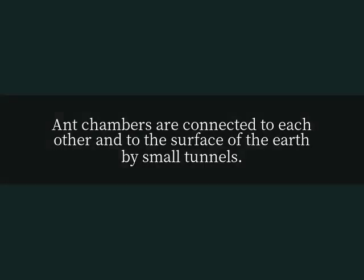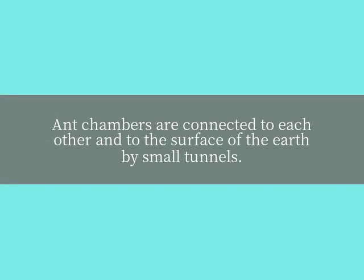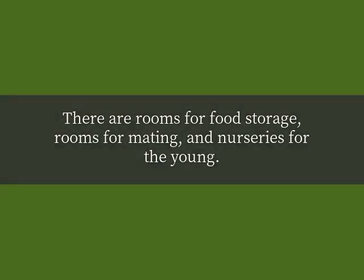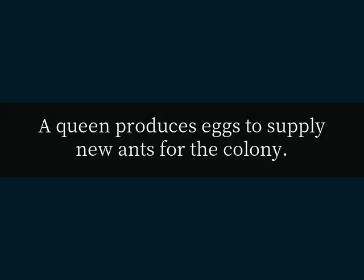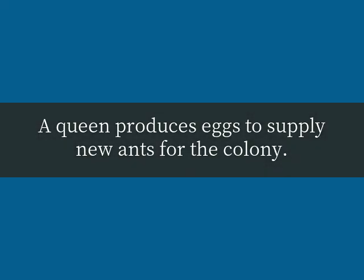Ant chambers are connected to each other and to the surface of the earth by small tunnels. There are rooms for food storage, rooms for mating, and nurseries for the young. A queen produces eggs to supply new ants for the colony.